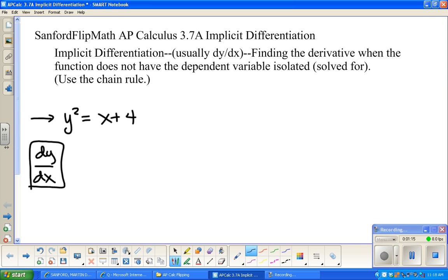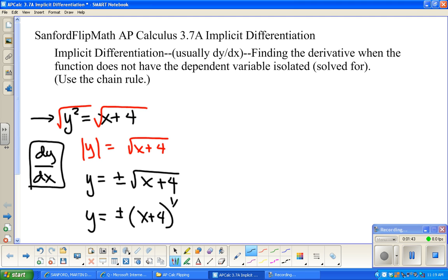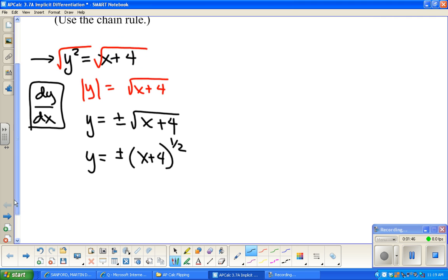So if I take the square root of both sides of this thing, what I end up with is the absolute value of y equals the square root of x plus 4, and usually the way we handle that is y equals plus or minus, positive or negative, square root of x plus 4. Now I haven't done any derivative yet. All I've done is rewrite this in a different form.